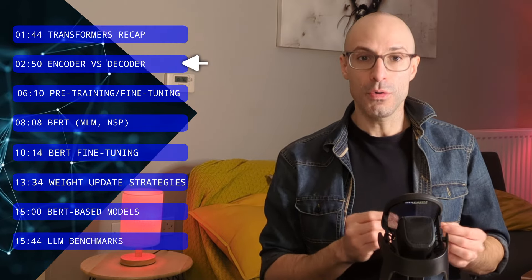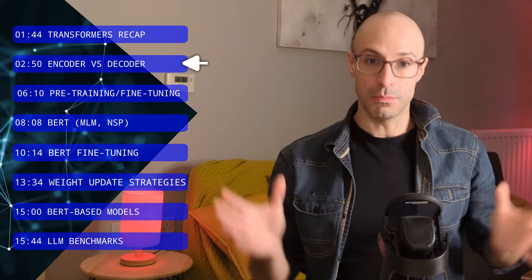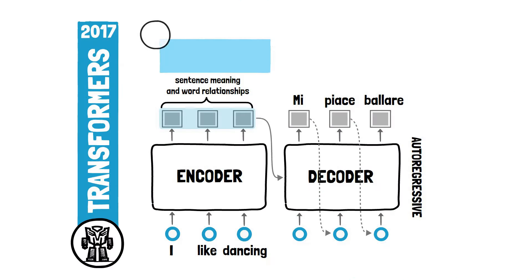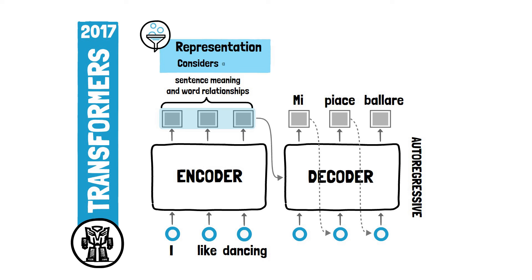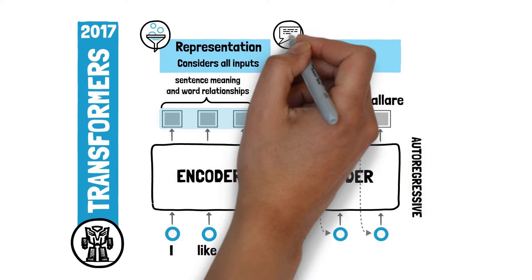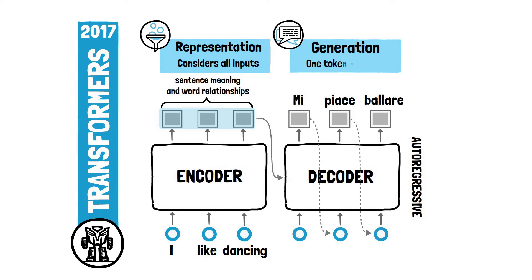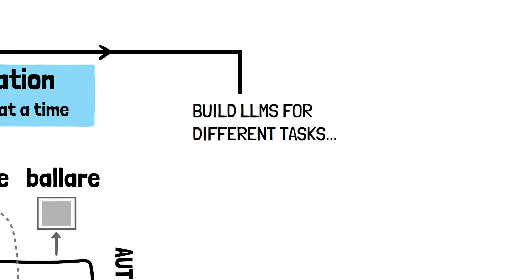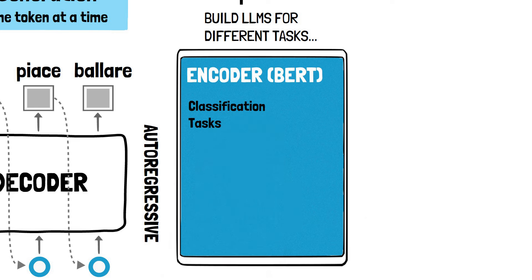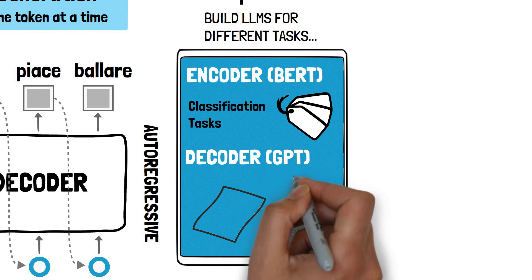The encoder and the decoder are actually quite similar from an architectural perspective — the building blocks are pretty much the same. The difference is mainly in the role and function that we assign them as part of the bigger model. The role of the encoder is to generate rich representations of an input sentence considering all input tokens, while the role of the decoder is to generate text one token at a time. This means we can take either the encoder or the decoder separately to build language models for different tasks. Encoder-based models like BERT are generally better at classification tasks, while decoder-based models like GPT are more suited for text generation tasks.